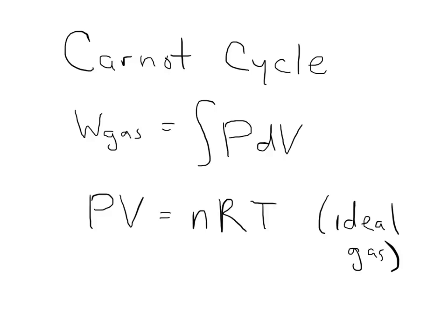We can work this out for an ideal gas, and in an ideal gas we know that PV is equal to nRT, where P is the pressure, V is the volume, N is the number of moles, R is the ideal gas constant, and T is the temperature in Kelvin — and it's very important to remember that it's in Kelvin.